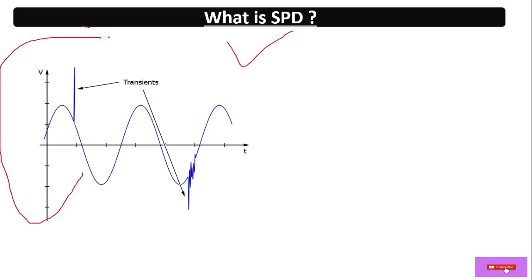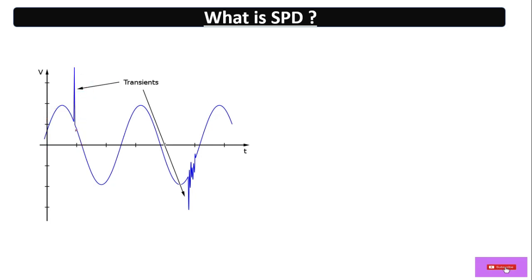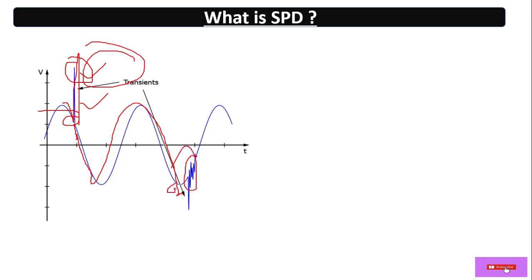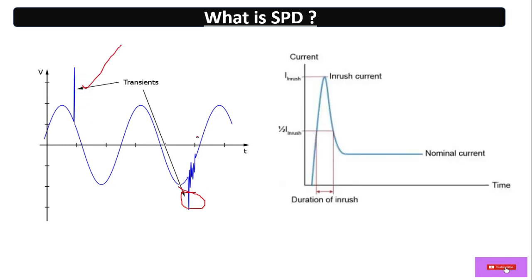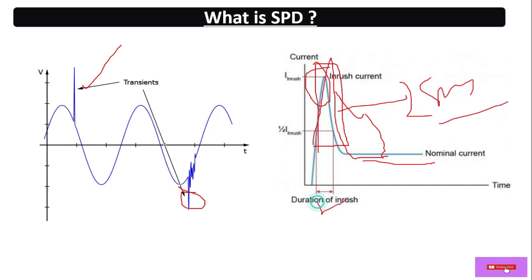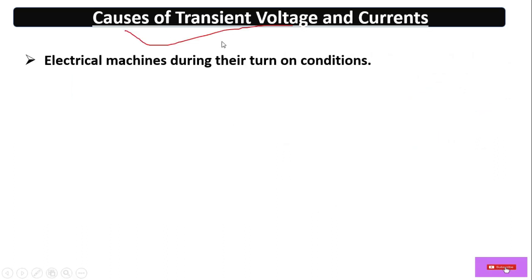Here you can see a sine wave diagram of AC voltage. In the positive cycle you can see a peak — this is actually a transient voltage. For a few milliseconds it suddenly rises, then returns to normal after a few milliseconds. Similarly for current, this is the normal rated current and this short-time raised current is the inrush or surge current.